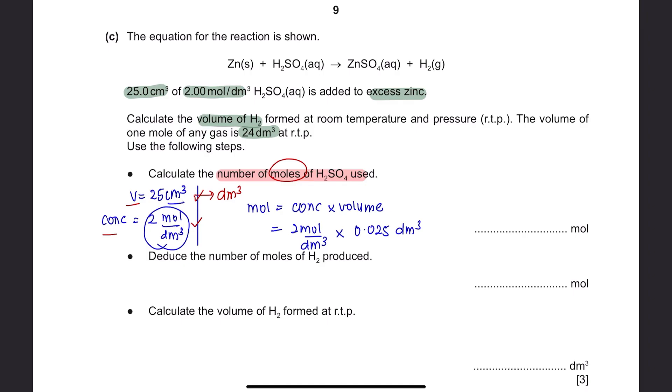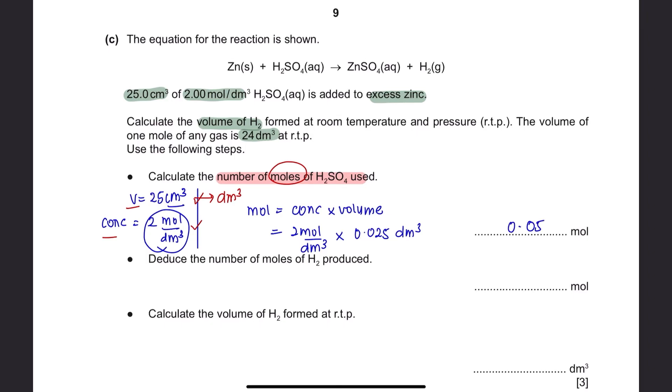Step 2, deduce the number of mols of hydrogen produced. Using the balanced symbol equation, we can see that 1 mol of sulfuric acid will react with 1 mol of hydrogen gas. From step 1, we have obtained the number of mol for sulfuric acid which is 0.05. Using the ratio of 1 to 1, you will also get the number of mols of hydrogen produced which is 0.05.